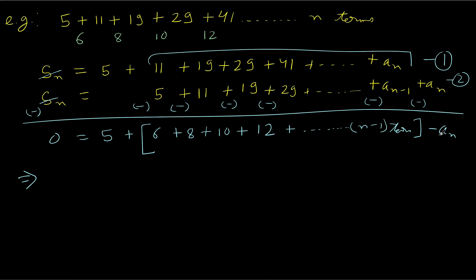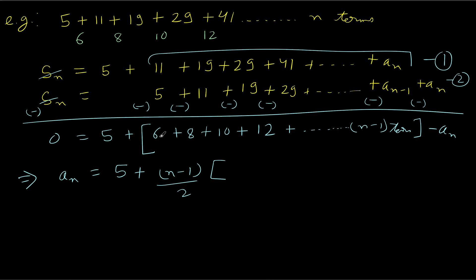Now, this arithmetic progression has a first term of 6 and a common difference of 2. So we apply our formula: sum equals (N/2) times (2A plus (N−1) times D). Here N is N minus 1, so we have ((N−1)/2) times (2A = 12) plus (N minus 1 minus 1, which is N minus 2) times D, where D is 2.